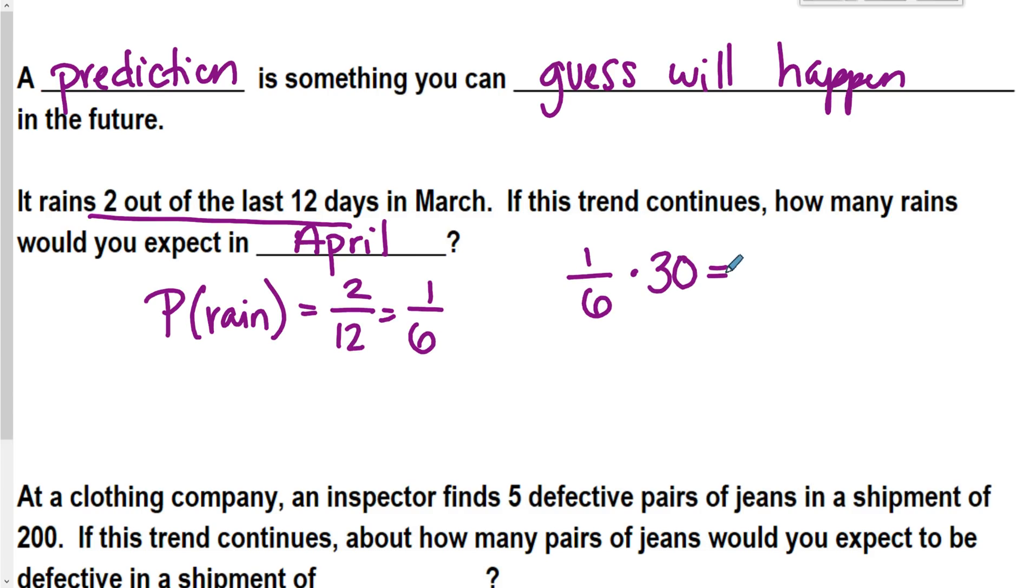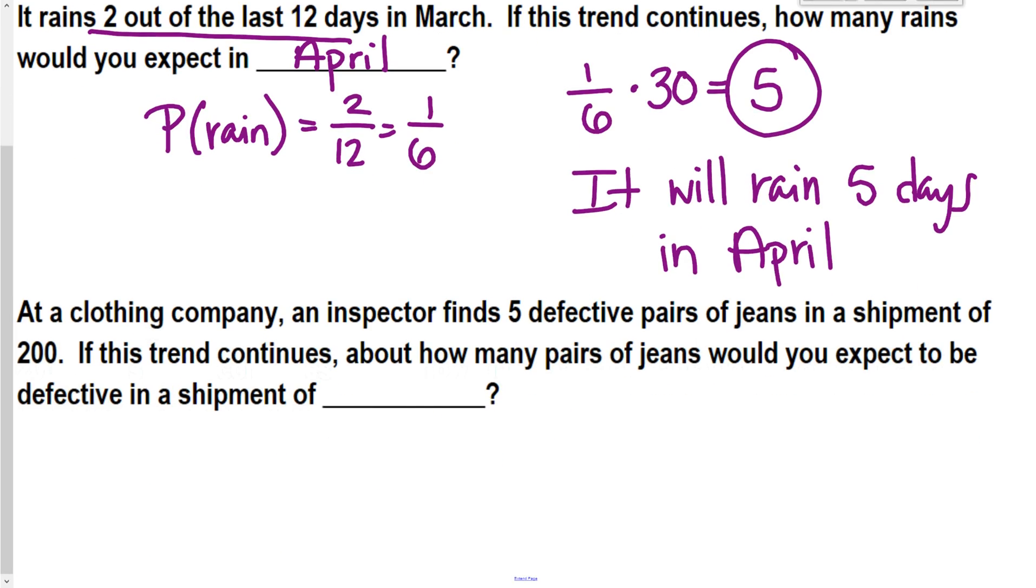So 1 out of 6, or 1 over 6 times 30 gives me 5. So that's my answer. So my prediction is that it will rain 5 days in April. And I can just use that probability of March. And then also really, what I kind of did here, it is a proportion. I just didn't write it fully out. But you can use that proportion there too.